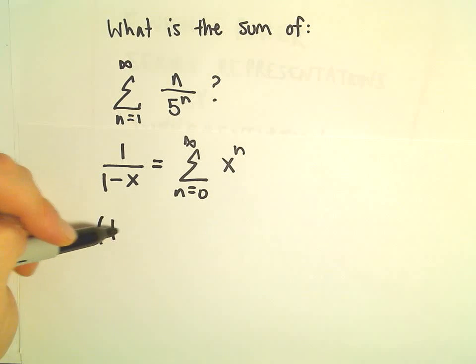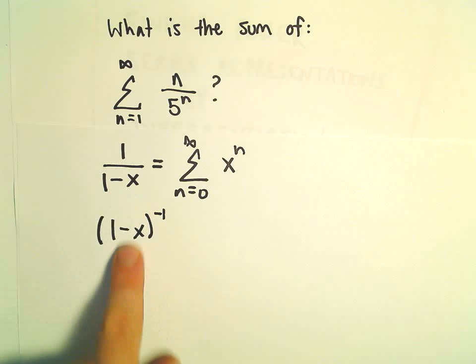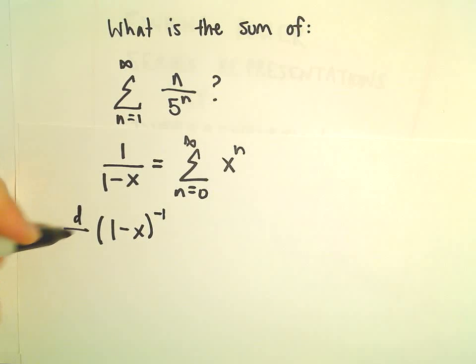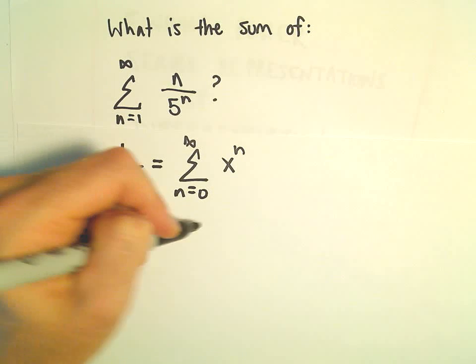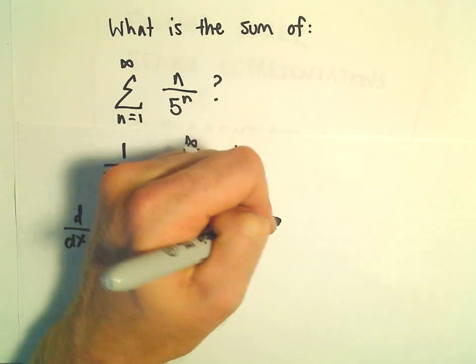So what I'm going to do is take the derivative of both sides. First, I'm just pulling the 1 minus x up to the numerator. We're going to take the derivative with respect to x of that, and take the derivative with respect to x of the right side as well.